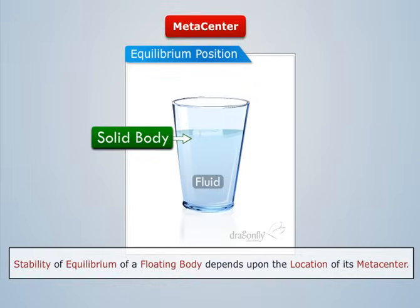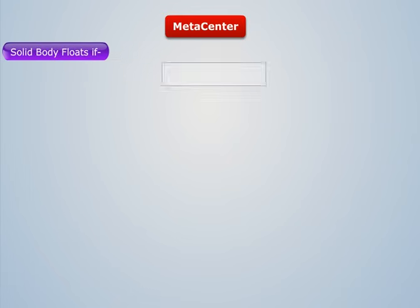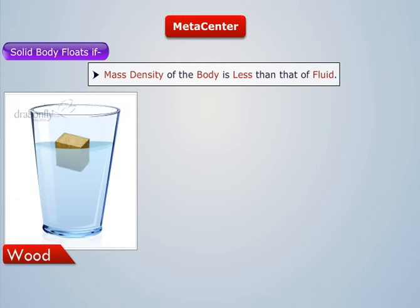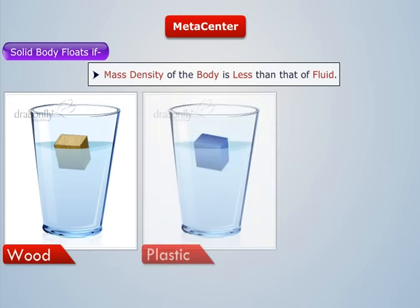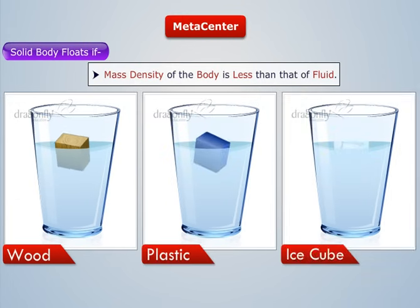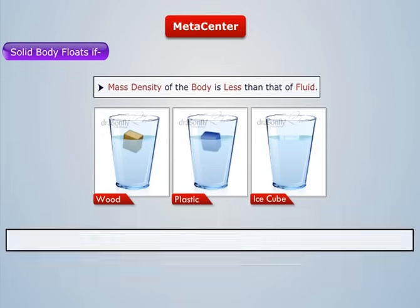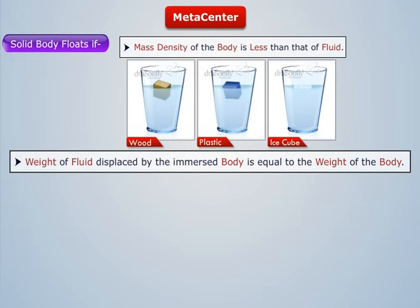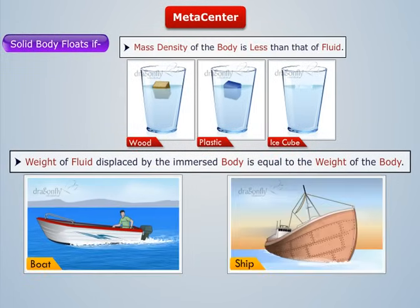To understand this, let us recall that a solid body floats in a fluid if the mass density of the body is less than that of the fluid, as in the case of wood, plastic, ice cube, etc. And if the weight of fluid displaced by the immersed body is equal to the weight of the body, as in the case of a boat, ship, etc.